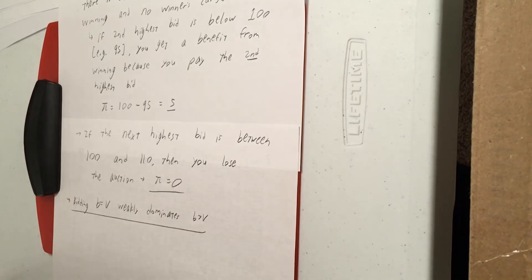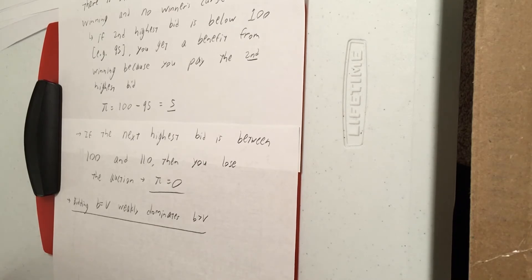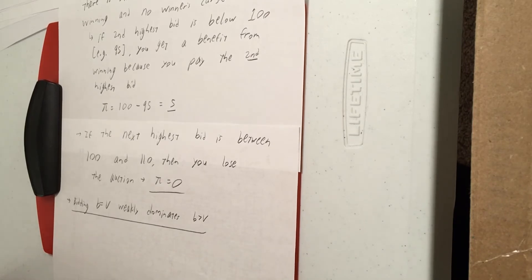So this analysis says we should never intentionally overbid, even in a second-price auction. We've ruled out overbidding. But should we ever possibly underbid? In a first-price auction — the more traditional format where you pay what you bid — underbidding was optimal.